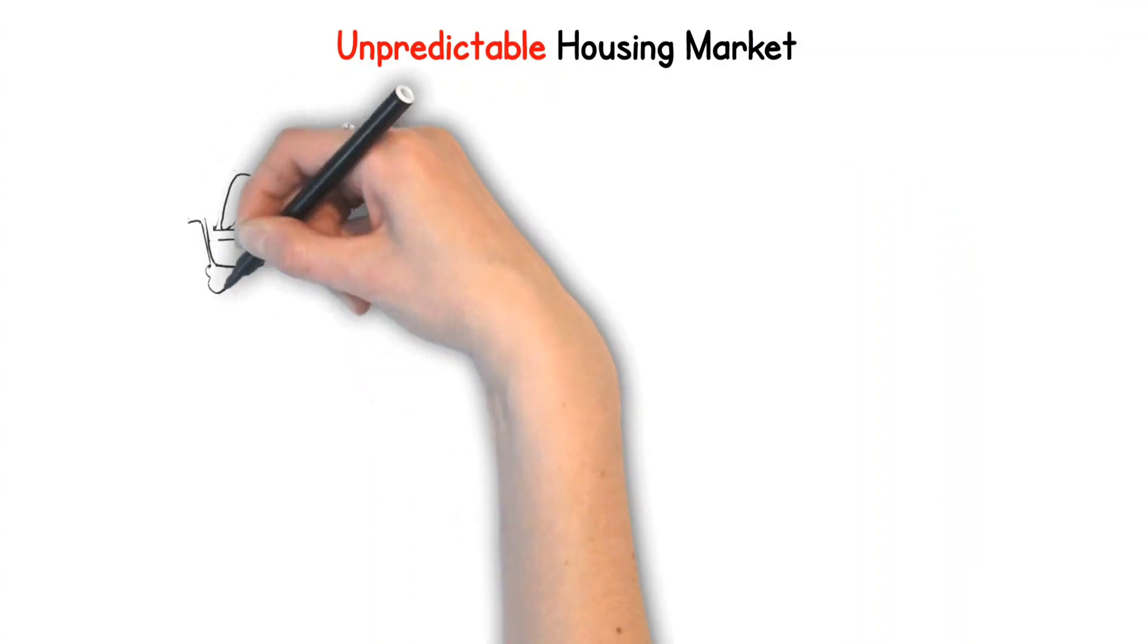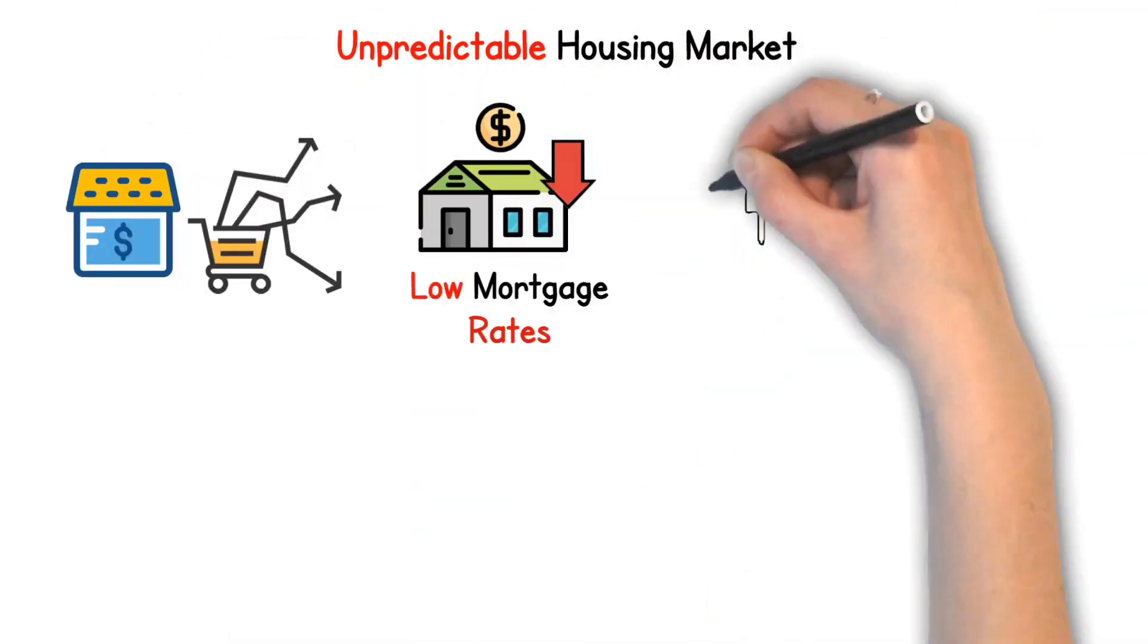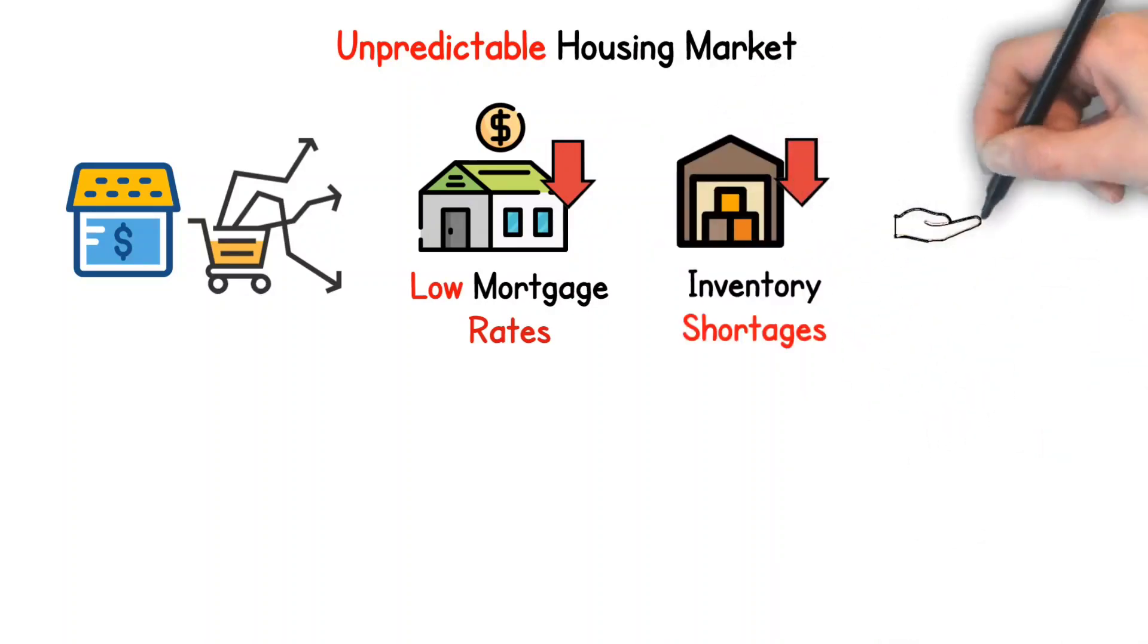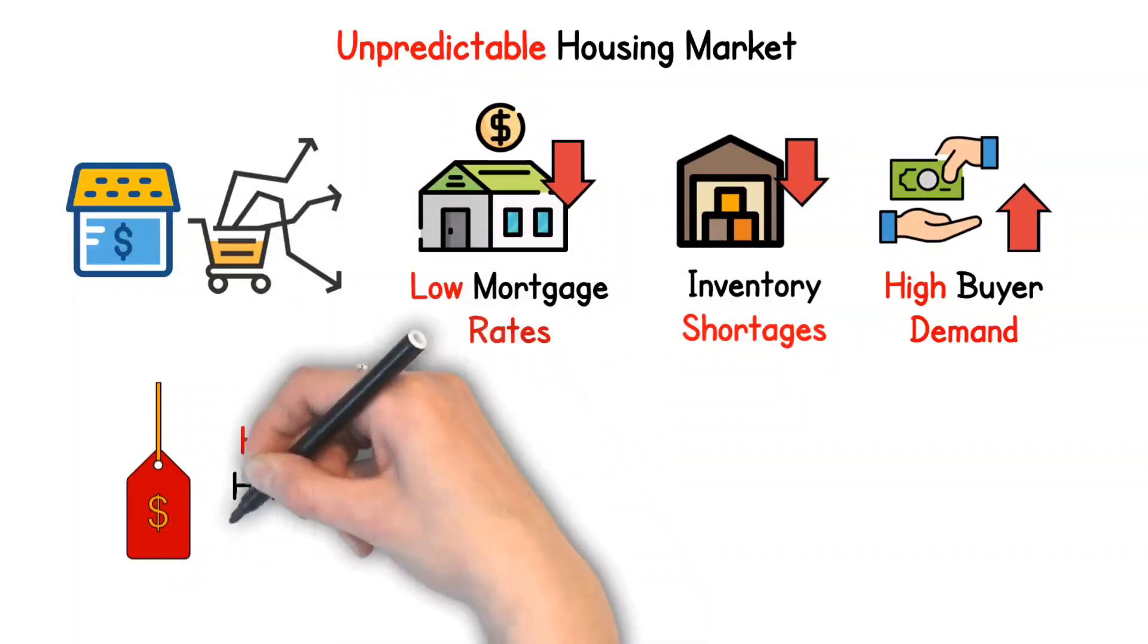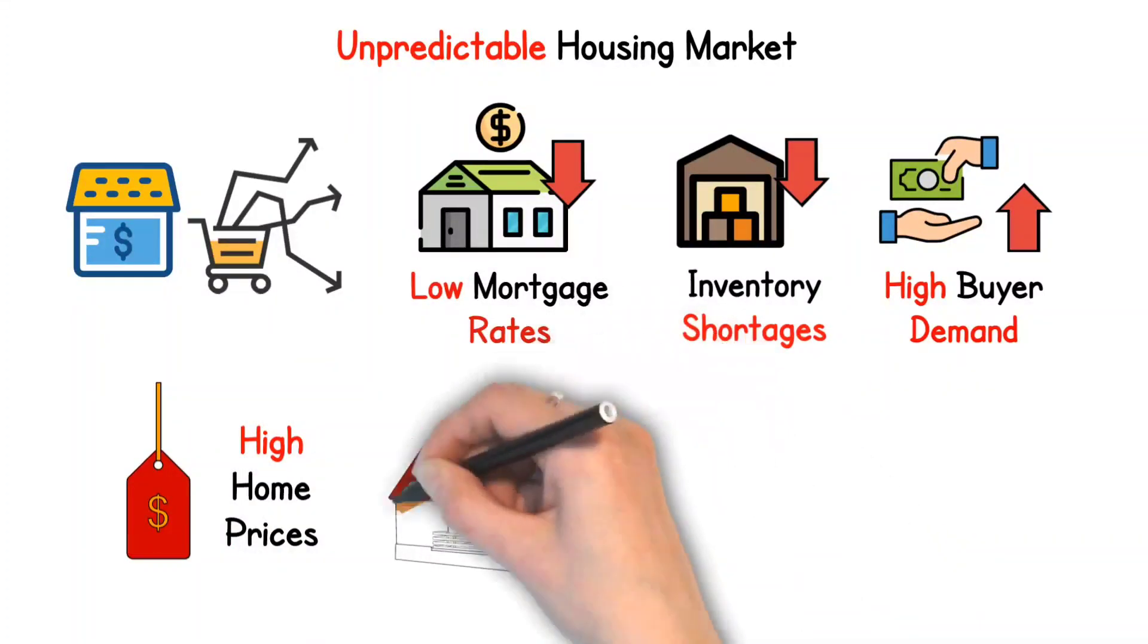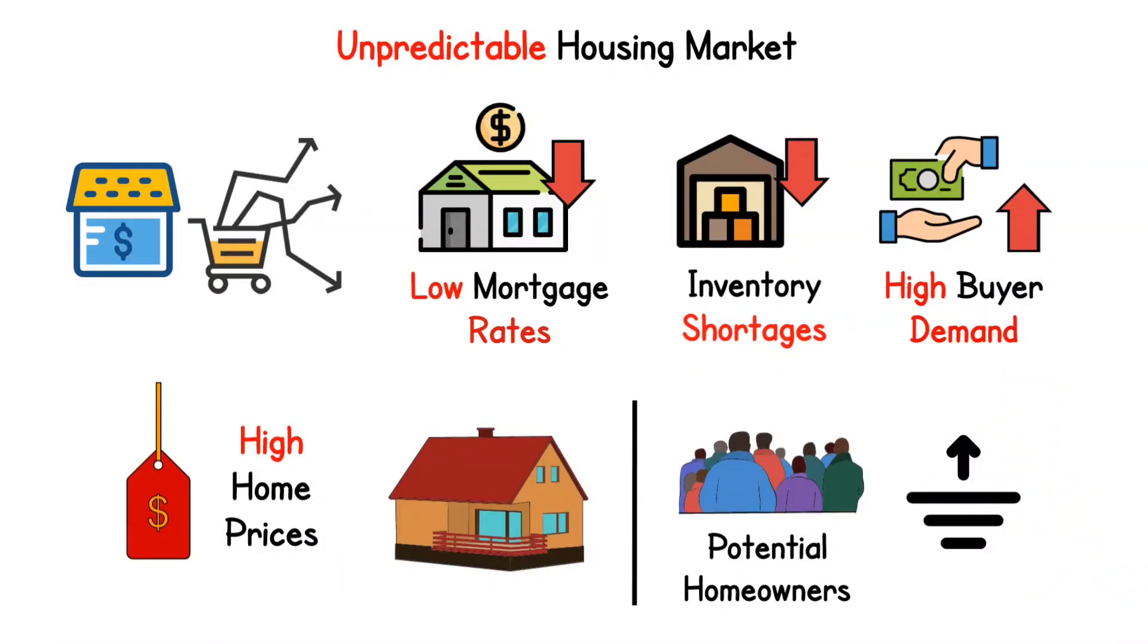Unpredictable housing market. We have seen an unpredictable housing market, characterized by historically low mortgage rates, inventory shortages, and heightened buyer demand, all of which have contributed to soaring home prices. This trend has made the barrier to entry for potential homeowners significantly higher than in previous years.